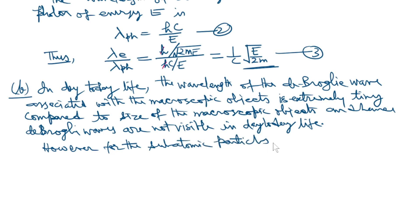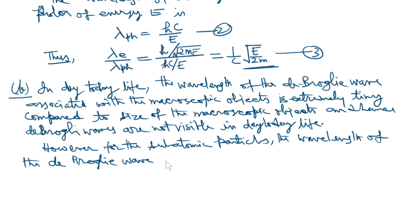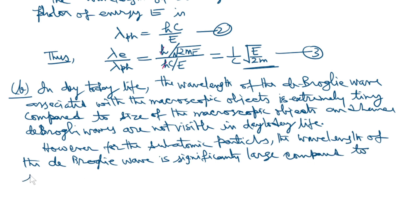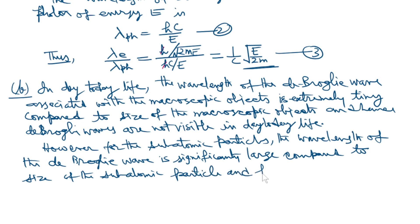The wavelength of the de Broglie waves is significantly large compared to the size of the subatomic particle, and hence wave nature dominates over the particle nature.